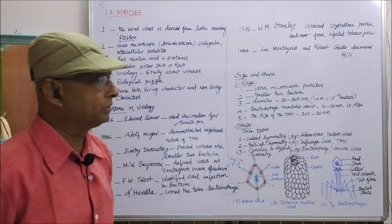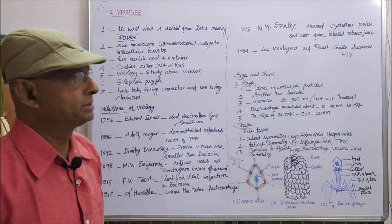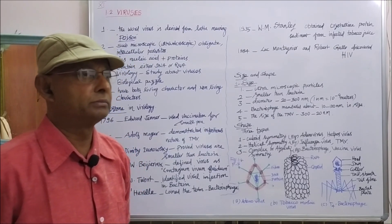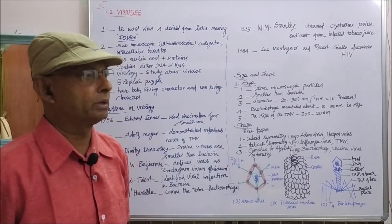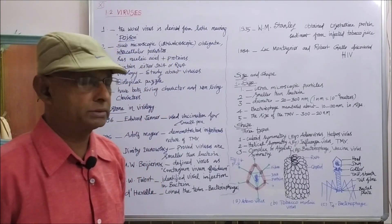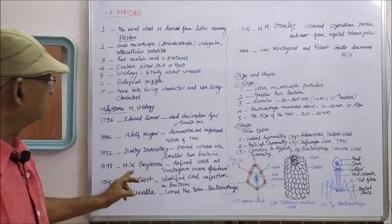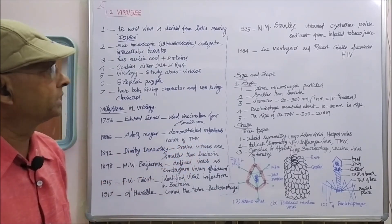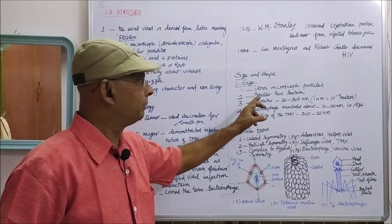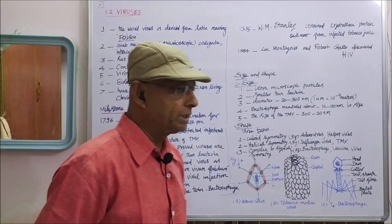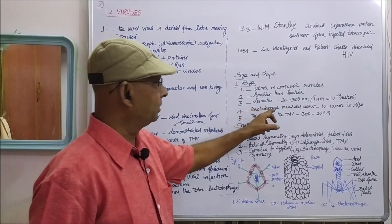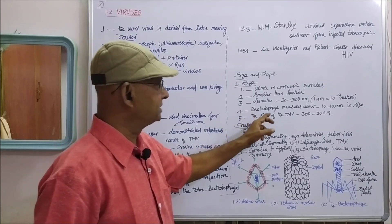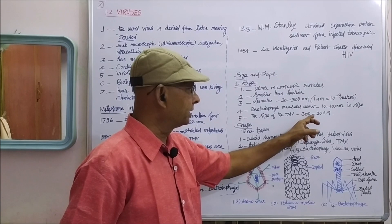Now the size and shape of viruses. Since viruses are ultramicroscopic particles, they are very small — smaller than the smallest bacteria, as proved by Dmitry Ivanovsky. The diameter of viruses is generally 20 to 300 nanometers, where 1 nanometer equals 10⁻⁹ meters. Bacteriophages measure about 10 to 100 nanometers, while tobacco mosaic virus is about 300 to 20 nanometers in size.